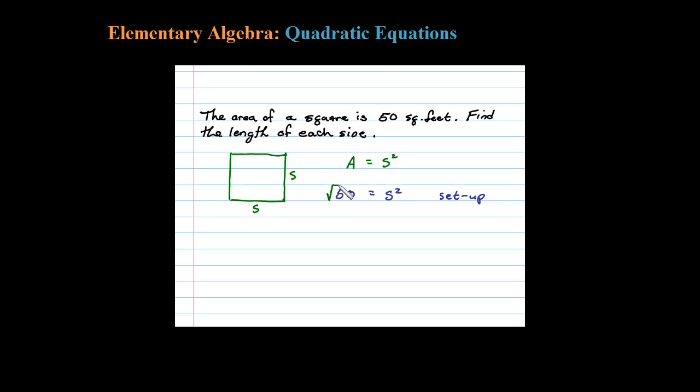So let's go ahead and solve for s. Take the square root of both sides. Don't forget the plus or minus when you do that, and this would be equal to the square root of 25 times 2 equals s. Just simplifying, the square root of 25 is 5, so plus or minus 5 times the square root of 2 equals s.